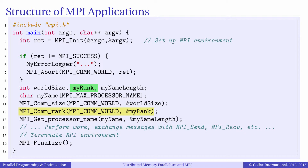Each process has a unique rank. Using the rank, processes can branch out or partition the problem so that all processes team up to perform a parallel calculation. For convenience, processes may query their respective host names. In order to cleanly terminate an MPI application, all processes must call MPI_Finalize.